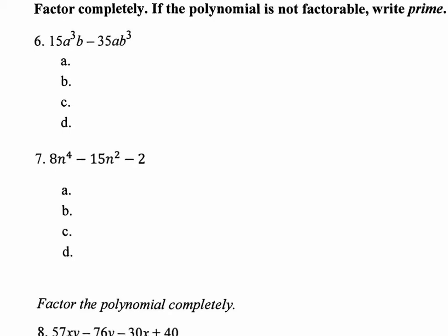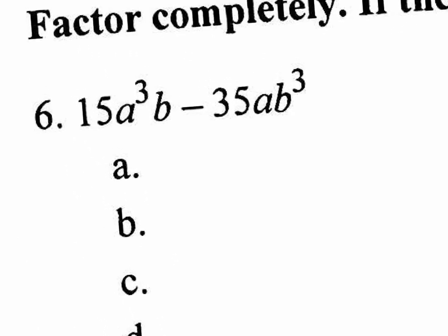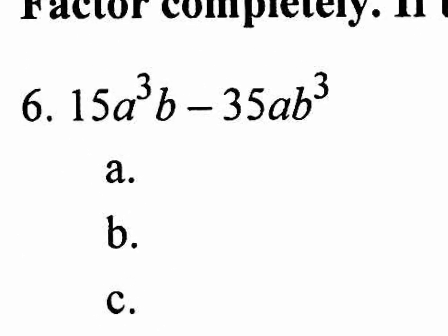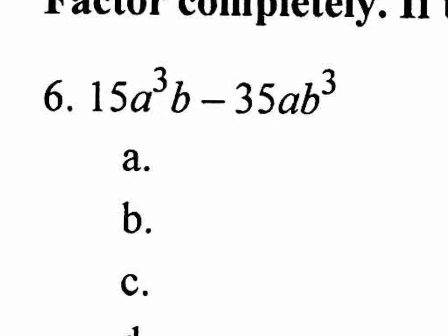What do I do on number six of this practice midterm? We can't combine because they're not exactly like terms. There's an A to the third B, there's an A, B to the third — they're not like terms. They want us to factor. Factoring is a reverse distributive property.